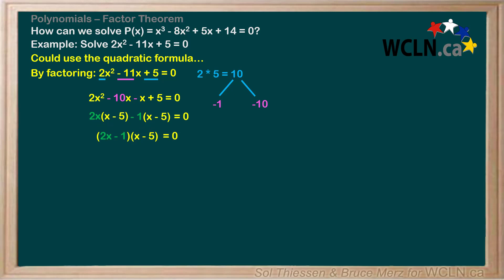From here, we can determine the values of x that will set each factor to 0 and solve the equation. Let's start with 2x - 1. We set it equal to 0 and begin solving for x. We add 1 to both sides to get 2x = 1, and then divide by 2 to get x = 1/2.